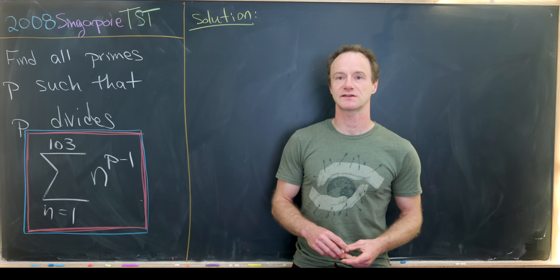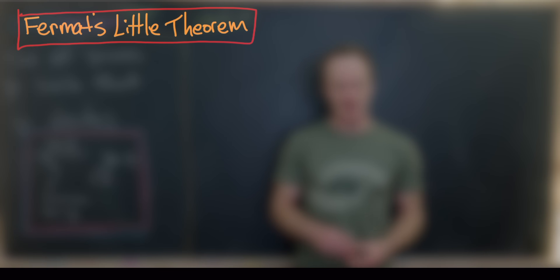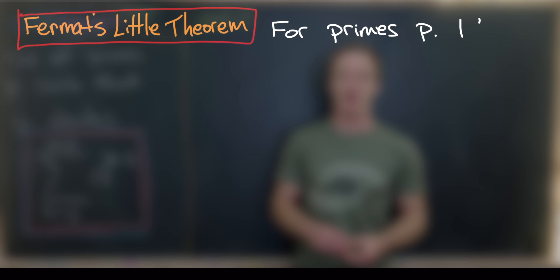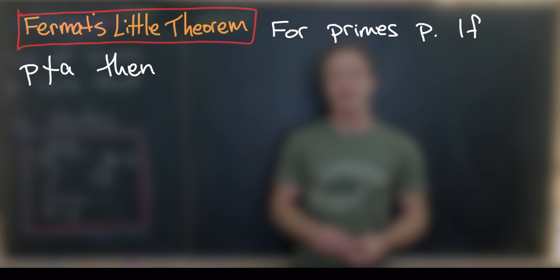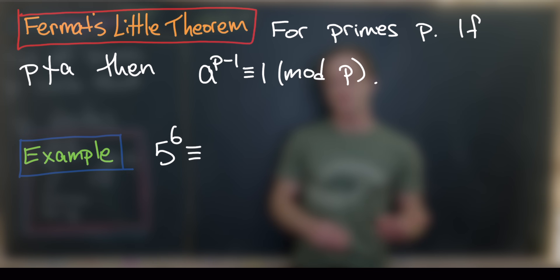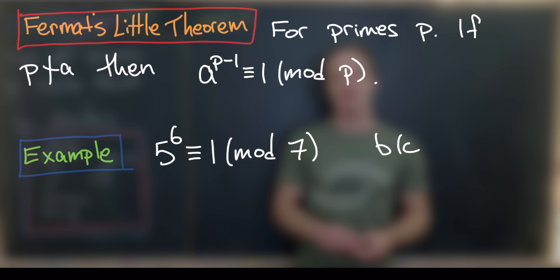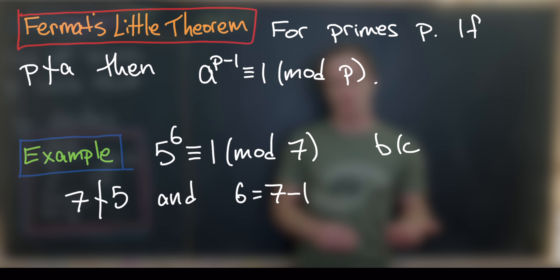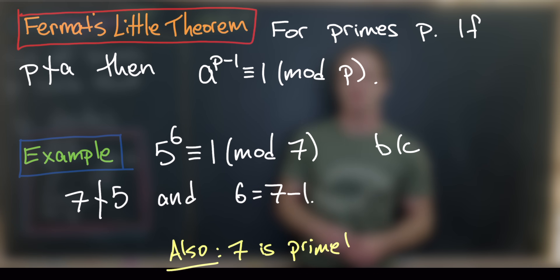Now, what about Fermat's Little Theorem? Fermat's Little Theorem says that if p does not divide a number a, then a to the power p minus 1 is congruent to 1 mod p. For example, 5 to the 6th power is congruent to 1 mod 7, because 7 does not divide 5 and 6 equals 7 minus 1.